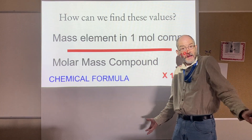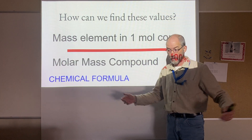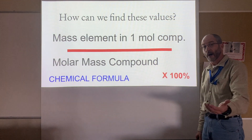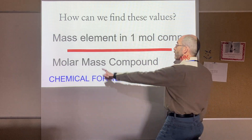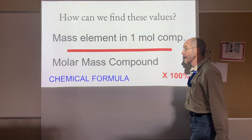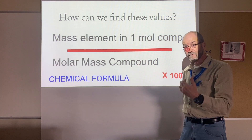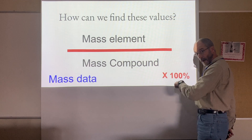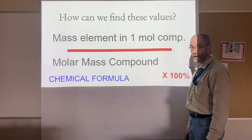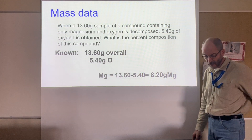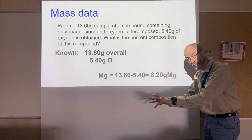What if I don't have mass data? What if all I have is the chemical formula? Well, you know how to calculate molar mass because you've already learned that earlier in the trimester. You know how to use a periodic table to calculate the molar mass of a compound and of an individual atom. So if I know the mass of the element in one mole of the compound and I know the molar mass of the compound, I just do this division, multiply by 100, and I find percent composition.